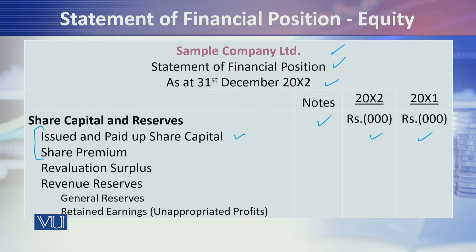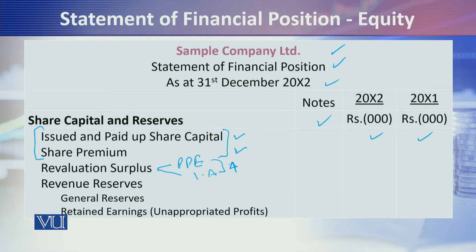Share premium is the additional amount received from the owner — these are two contributions from the owner. Simply put, the cash received from the owner equal to face value is written in share capital, and the amount exceeding face value is written in share premium. Revaluation surplus: when you revalue fixed assets — property, plant and equipment or intangible assets — upward, a surplus arises, and the regulatory framework says you must separately disclose this in owners' equity.